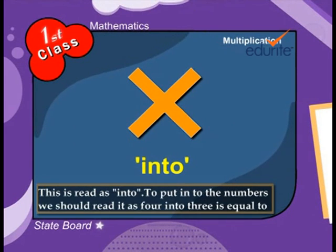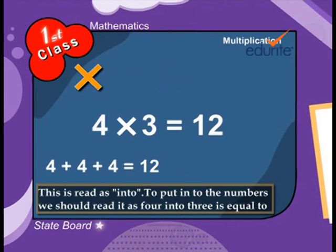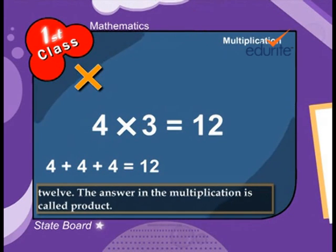This is read as into. To put into the numbers, we should read it as 4 into 3 is equal to 12. The answer in the multiplication is called product.